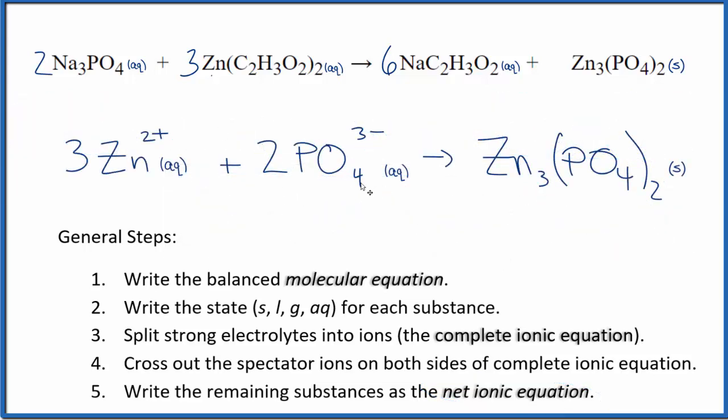So this is the balanced net ionic equation. You'll note charge is conserved. We have three times two plus, that's six plus, two times three minus, six minus. So charge balances out here to zero, over here neutral compound. Charge is conserved, and if you count the atoms up, they'll be balanced as well.